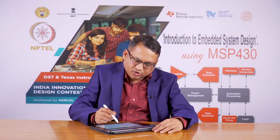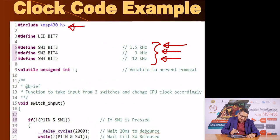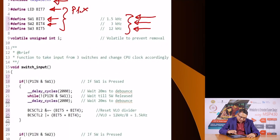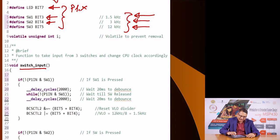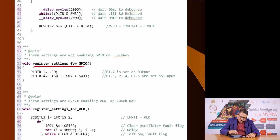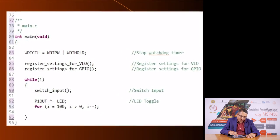At the beginning we have included the header file. We have defined that the LED is on bit 7 — bit 7 is a mask bit. Switches are at bit 3, bit 4, and bit 5, all on port 1. So that is P1.7 for the LED, and P1.3, P1.4, and P1.5 for the switches. We have a function called switch_input, another called register settings for GPIO, and a third called register settings for the VLO. The main program is really very simple.